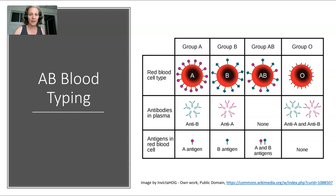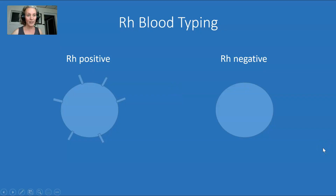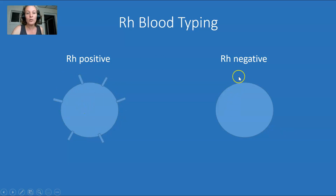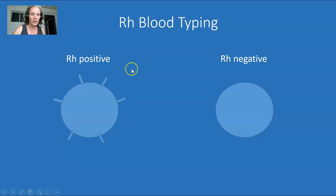The next type we're going to look at is the RH blood type. These are totally different proteins. When it comes to RH proteins, either you have them or you don't. So this is RH positive — meaning you positively have RH proteins on the outside of your red blood cell — or you don't have RH proteins on the outside of your blood cell. When you have a red blood cell, it either has these RH proteins or it doesn't. This has nothing to do with the A, B, and O proteins — that's a totally separate group of proteins.